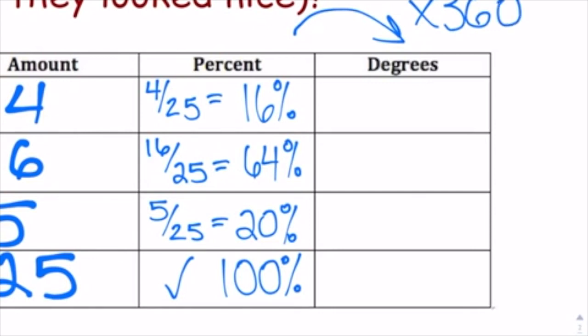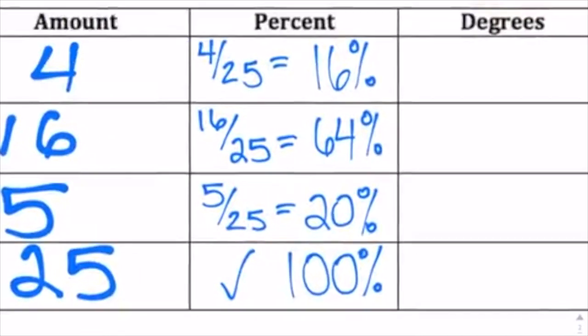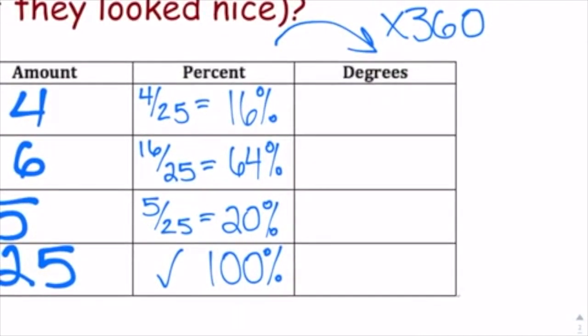So if I take 16% — that's 4/25 — times 360, my first angle measure for the amount of yes votes is going to come out to 57.6 degrees. I'm going to round these to the nearest whole number. With the size of our protractors, it doesn't really benefit me to keep a decimal here, since I wouldn't be able to find it that precisely.